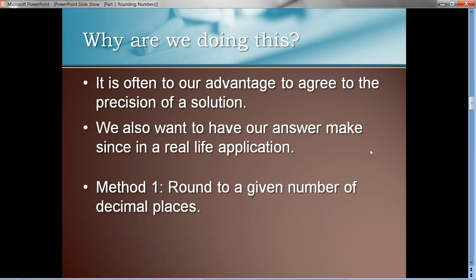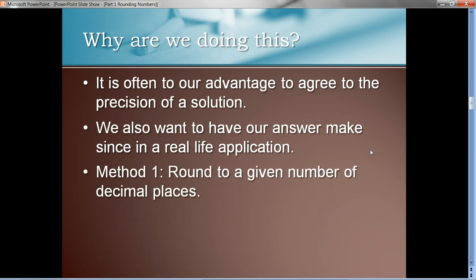Now, there's two methods we're going to use. The first method is to round to a given number of decimal places. You know, round to three decimal places or its equivalent to thousandths place, that kind of thing, because a lot of the numbers we round are like that.